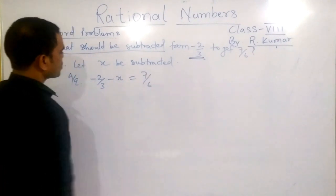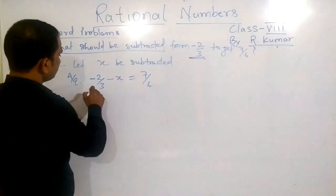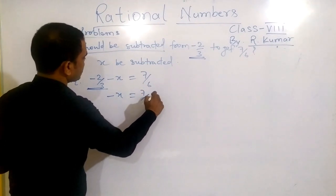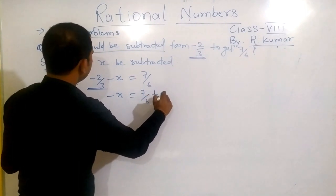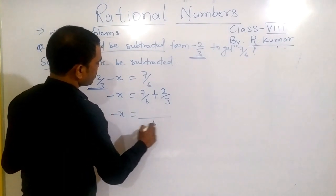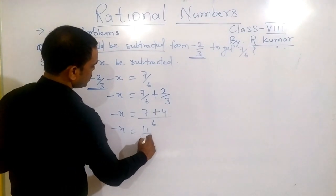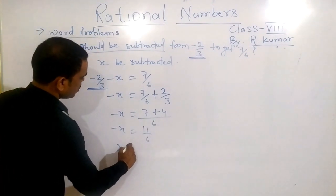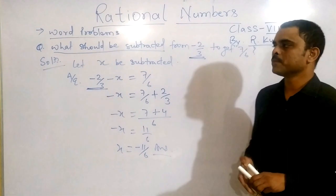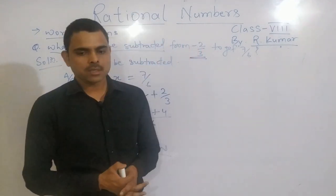Now once again, you have to solve for this unknown term. So this constant value you shift to that side. So minus x will be 7 by 6, and this is negative, so when you shift it will become plus 2 by 3. LCM will be 6. 7 plus 4. Minus x will be 11 by 6. Shift that side, x will become minus 11 by 6. This is the answer. So in this way we have seen word problems and how to solve these questions. Thank you, we will see some more questions in the next video.